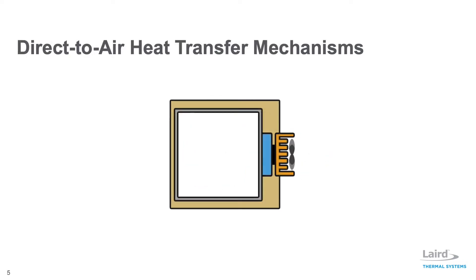Direct-to-air assemblies offer dependable compact performance by cooling objects via conduction. Heat is absorbed through a cold plate and the thermoelectric cooler pumps heat through a hot side heat exchanger into the ambient environment. The internal cold plate allows the chamber to be completely sealed, which aids in containing biohazardous liquids and minimizing contamination. It also saves space in small chambers that cannot accommodate a cold side heat exchanger. This configuration is commonly used in smaller sample storage chambers for medical and analytical instrumentation, spot cooling for laser systems, or sensitive optical electronics in the industrial and telecom markets.